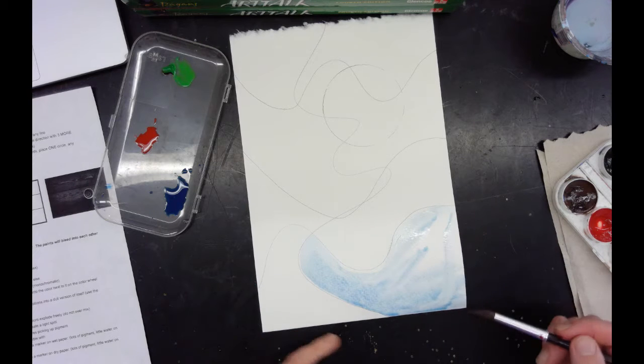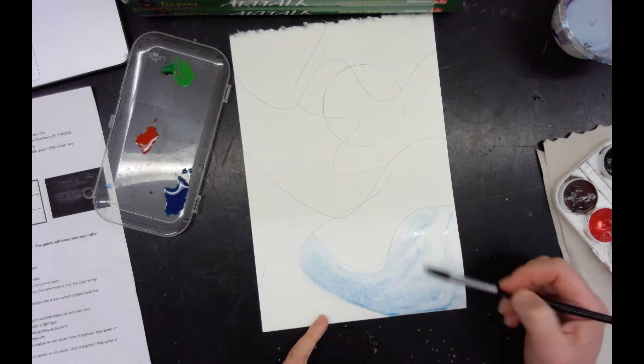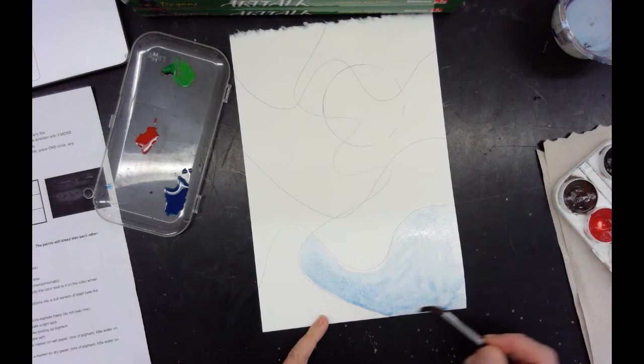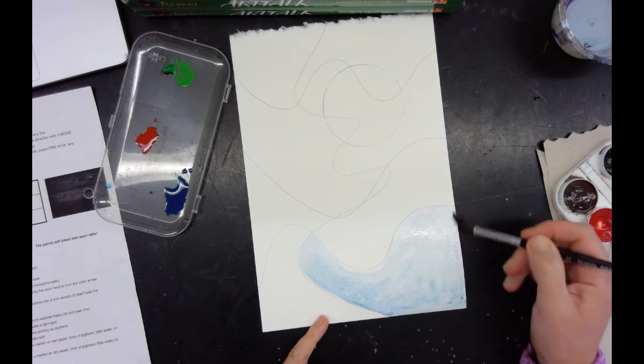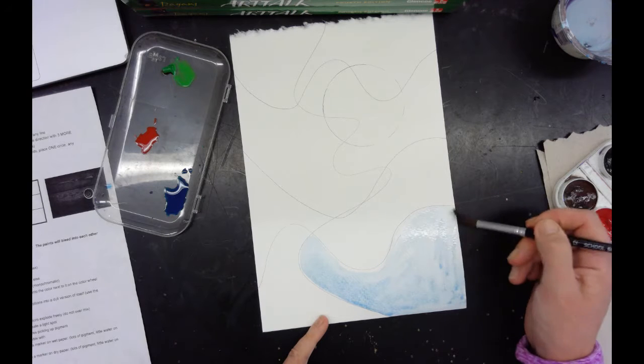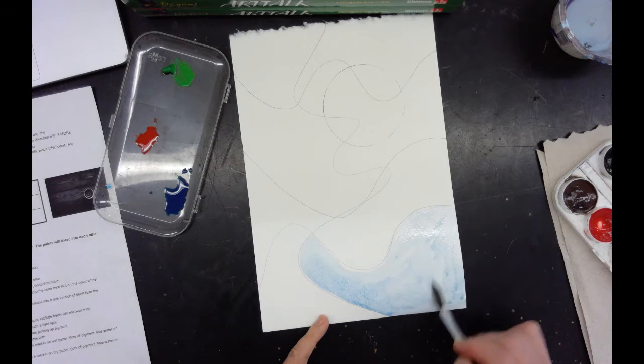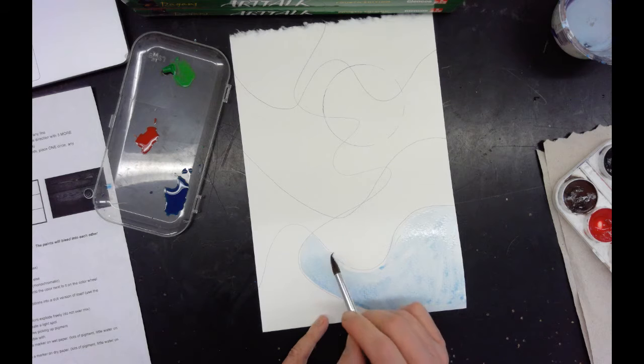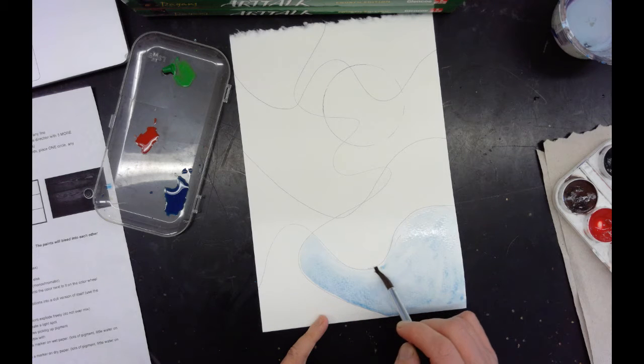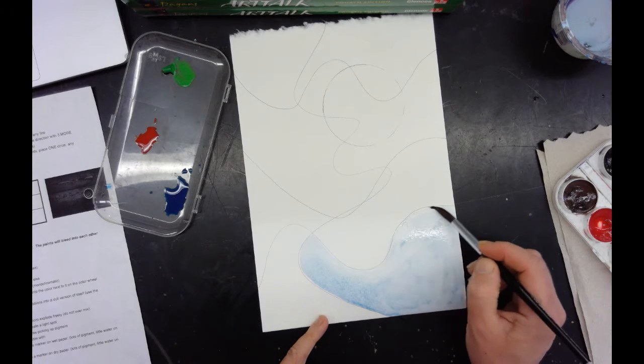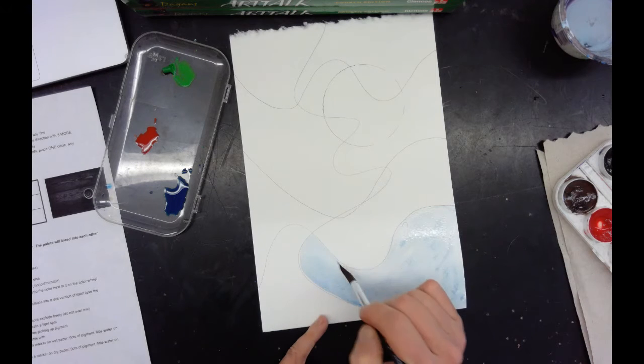Now can you start to see some of the texture showing up in here? This is cold press paper which has little bumps and ridges and valleys and hills on the paper, and you want that if you want to have a natural texture that shows up. The pigment puddles into those areas.